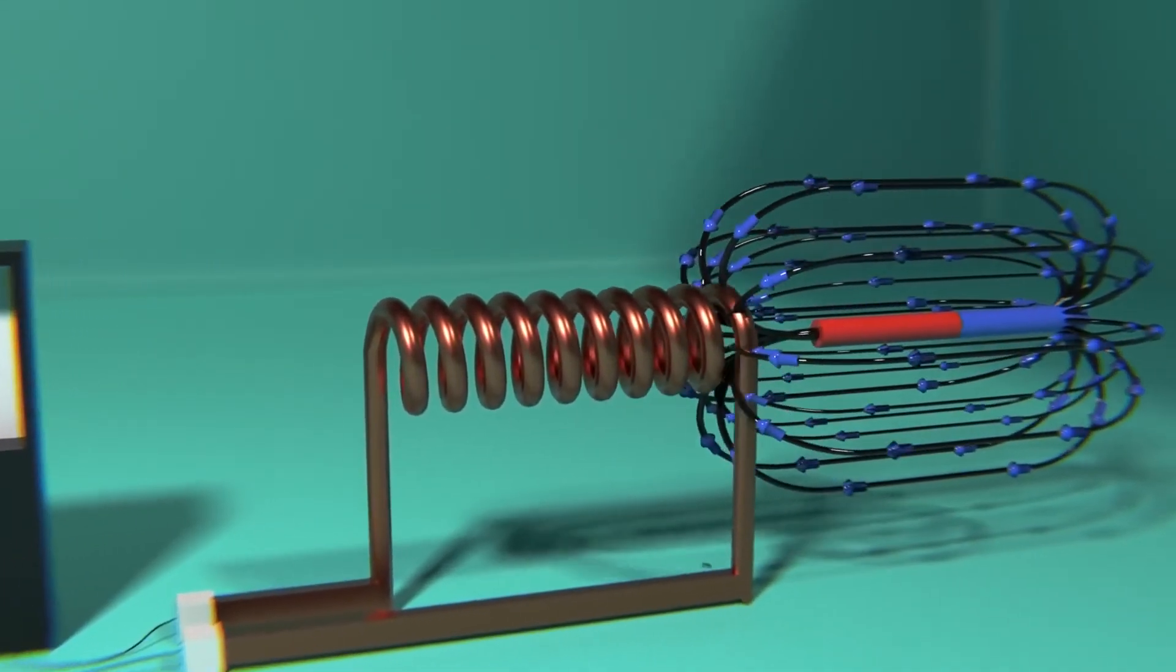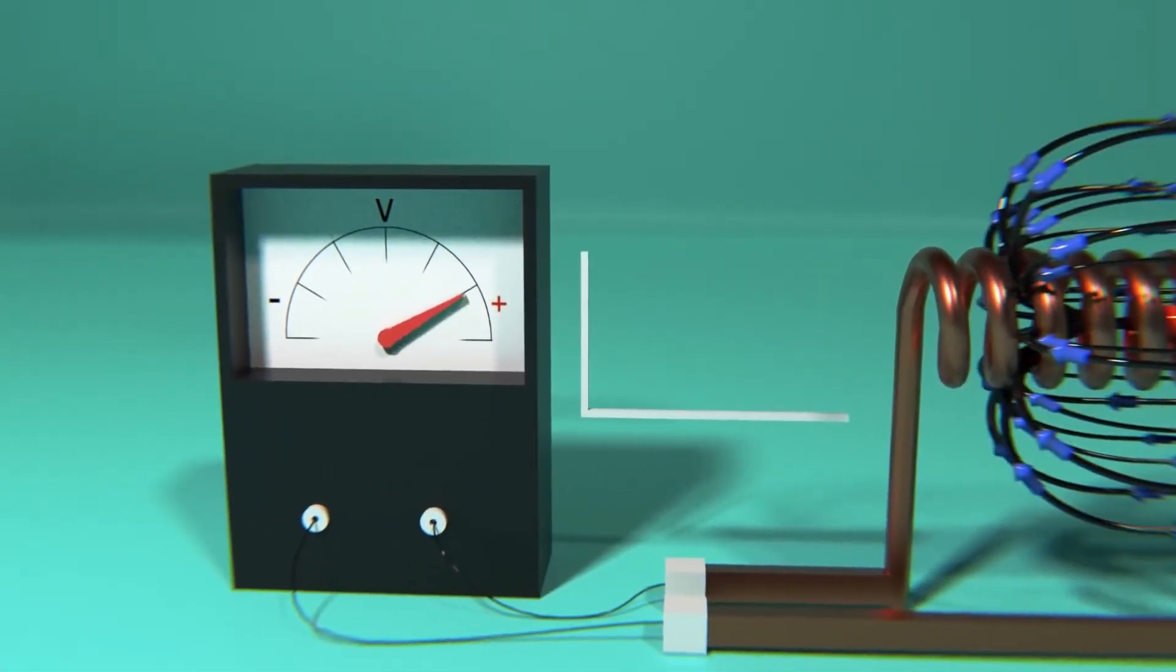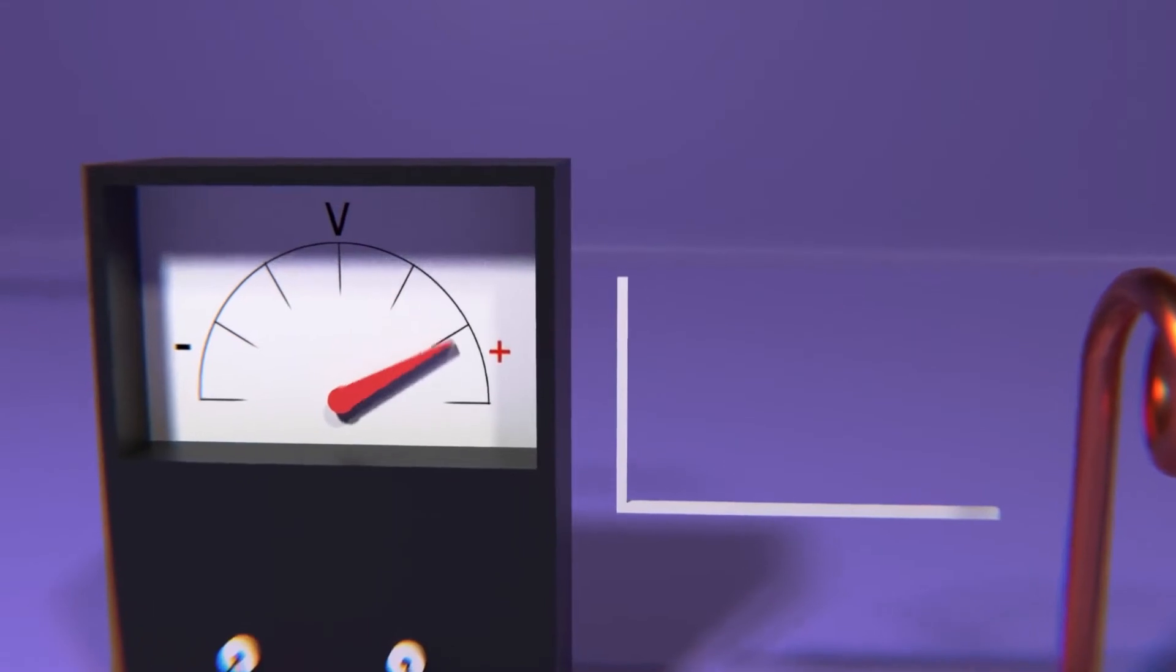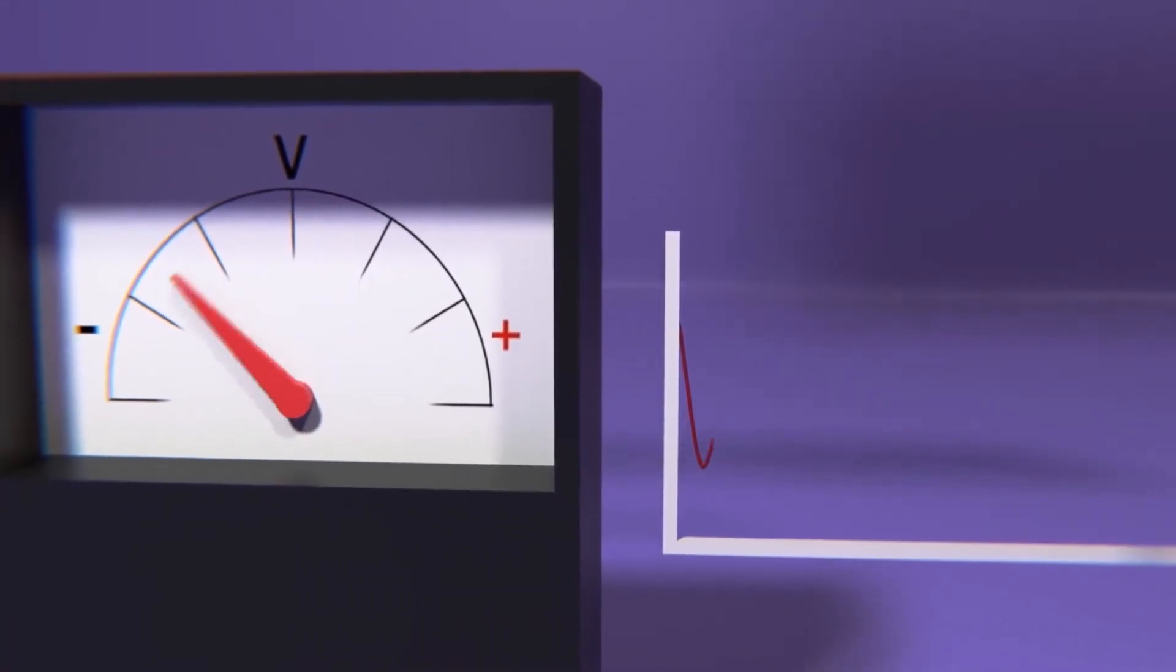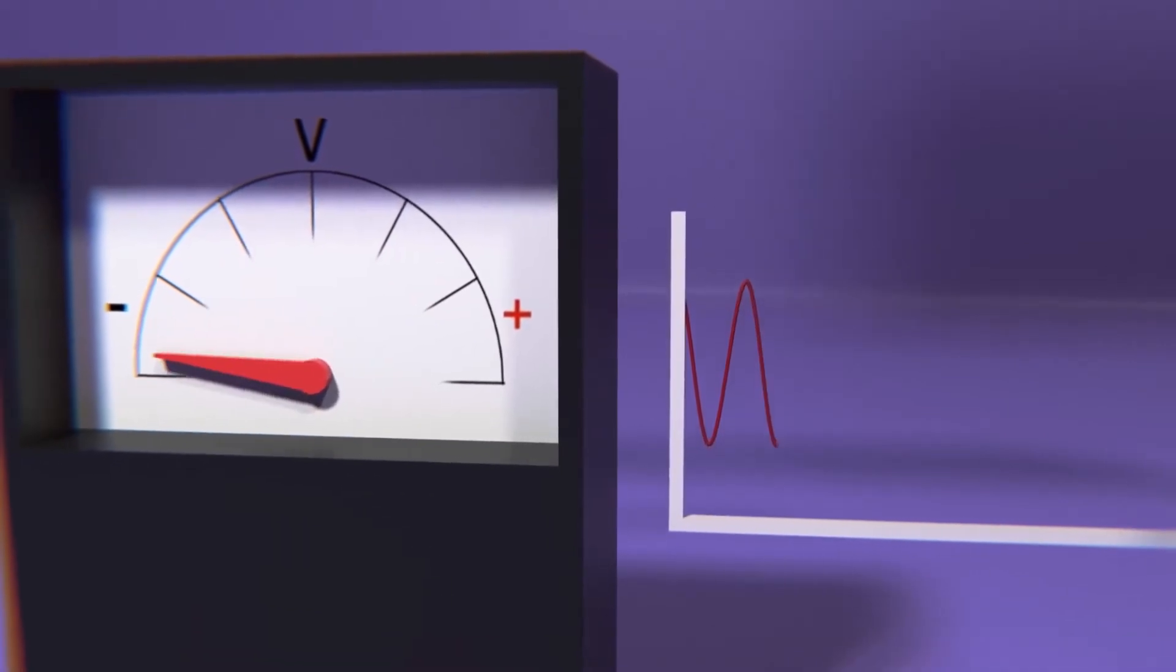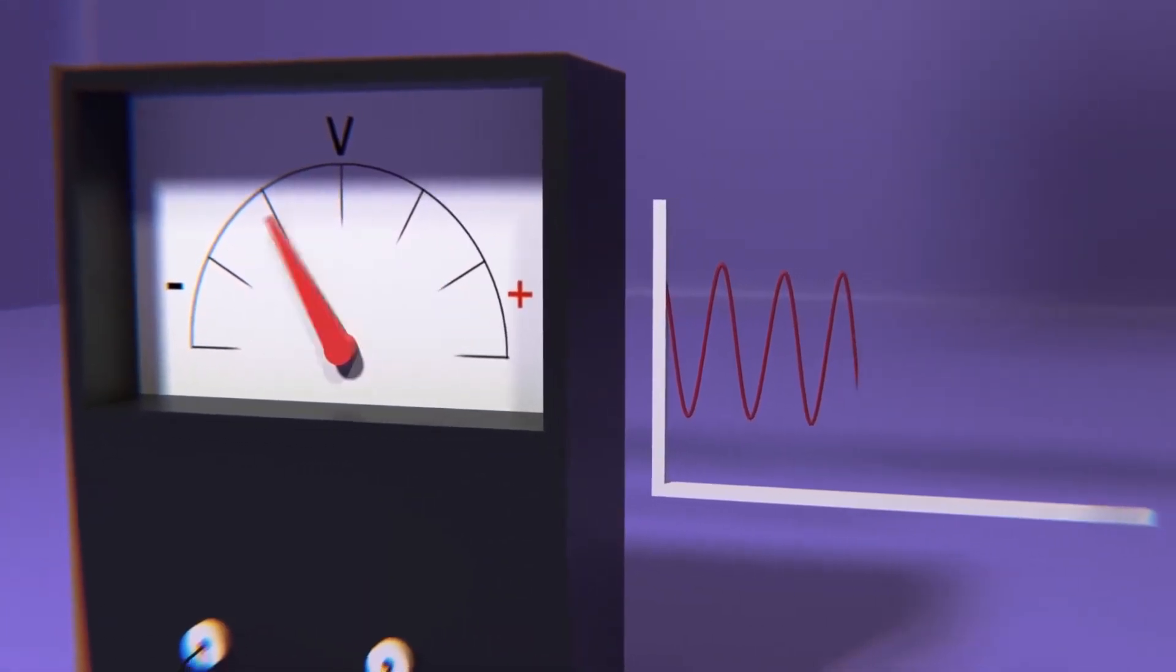If we graph that same voltage variation over time, we will find that it acts in a similar way to the sound waves we saw before. But we still need to replicate the waves that are generated, which by the way are extremely fast.